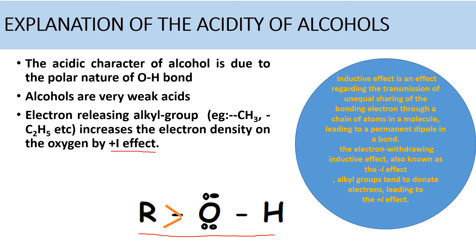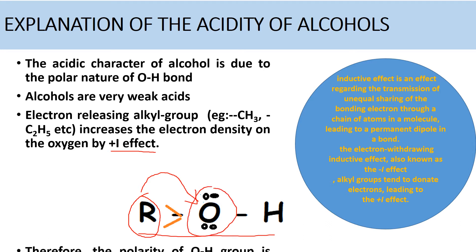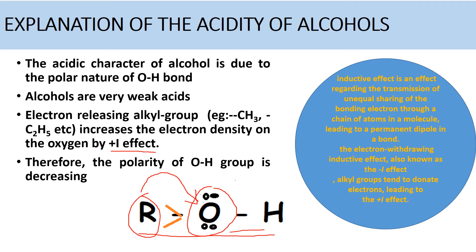The alkyl groups donate electrons to the oxygen atom, increasing the electron density on oxygen, which decreases the polarity of the OH bond. This makes proton release more difficult. A substance is said to be acidic if it donates H plus ions, but here H plus ion donation is very difficult due to the plus I effect of the alkyl group, thereby decreasing the acidic strength of the alcohol.